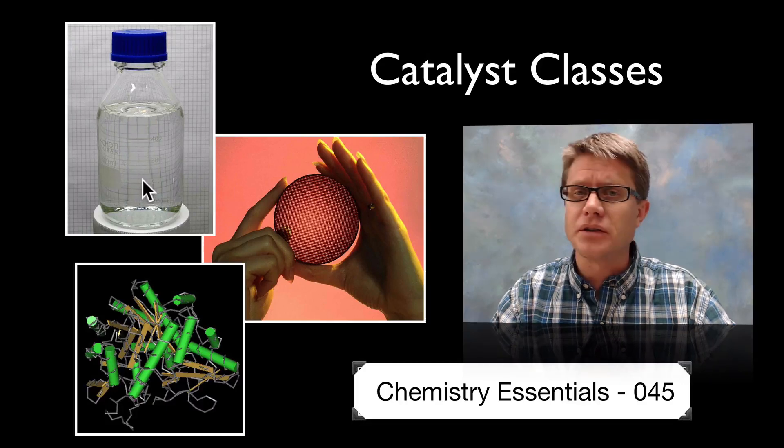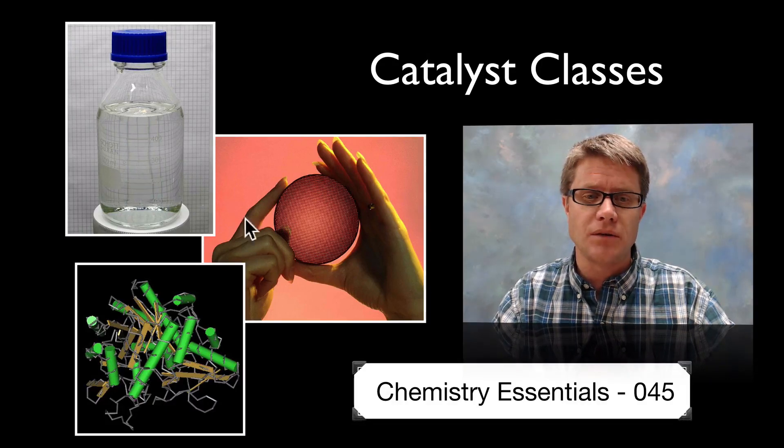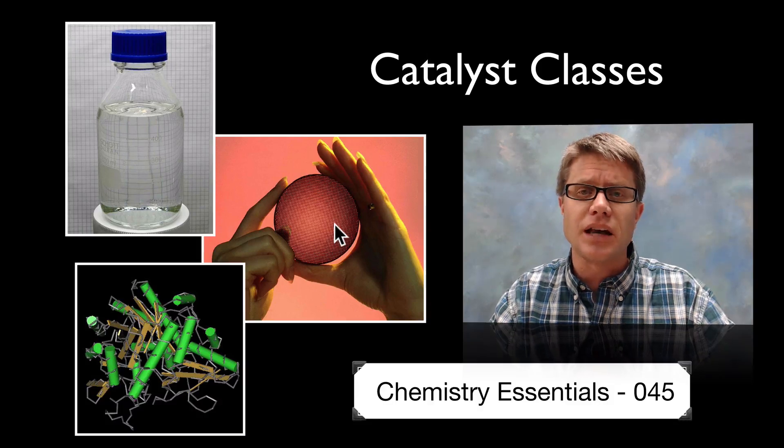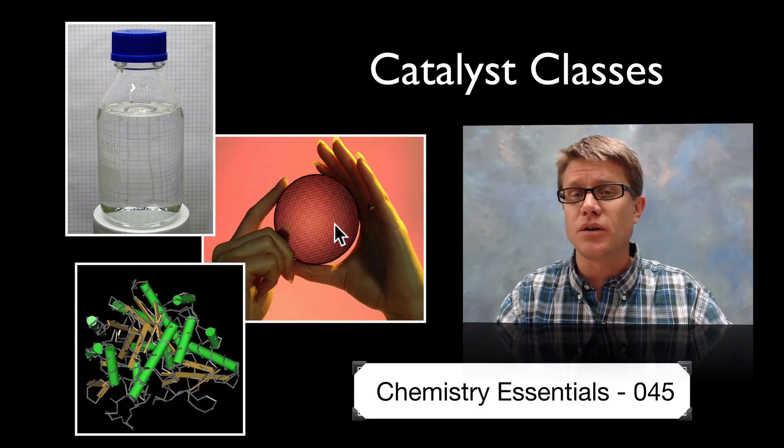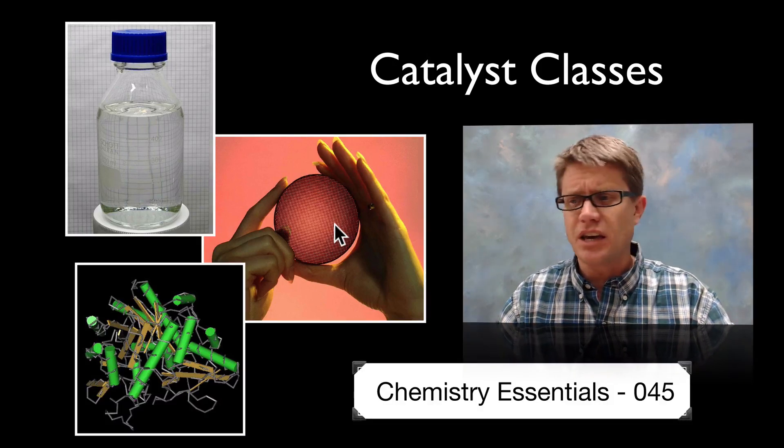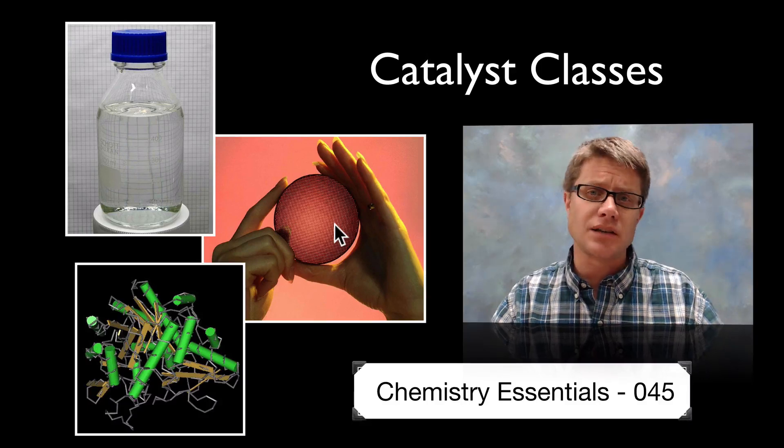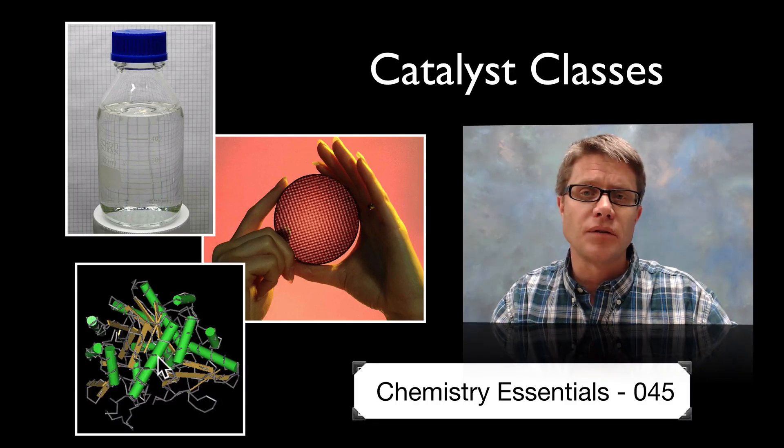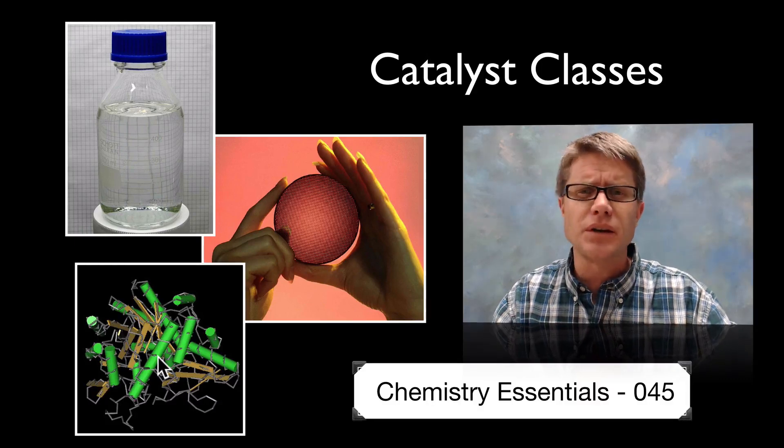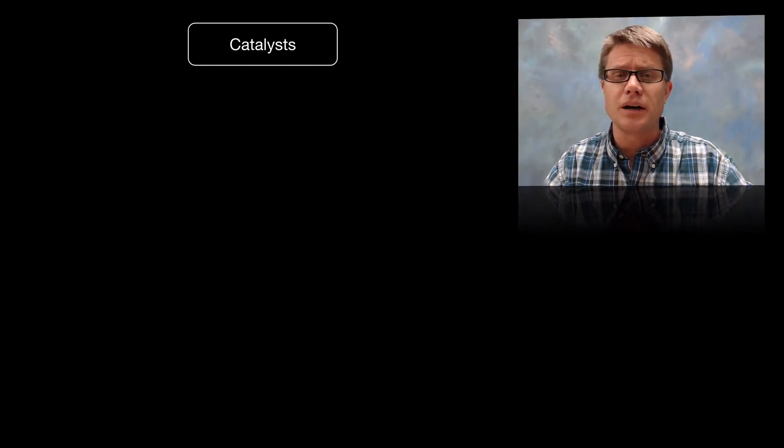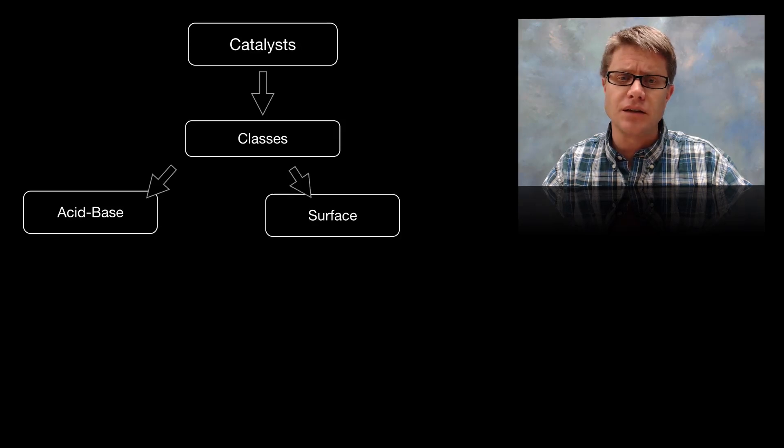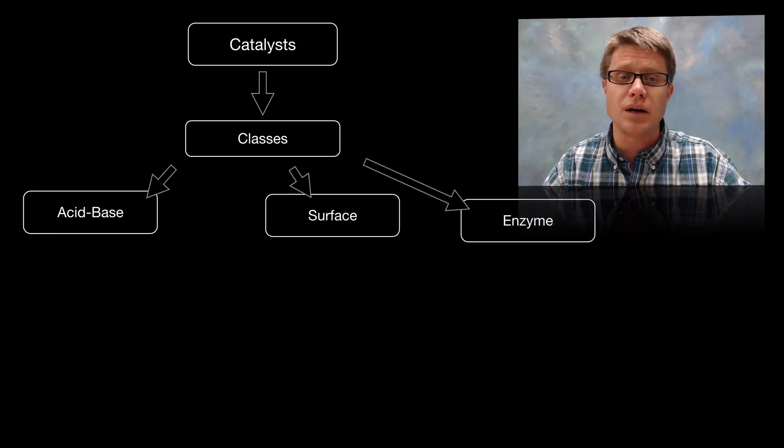We have acid base catalysts. So this sulfuric acid is going to be an example of that. We have surface catalysts, and so this would be similar to the catalyst you're going to find in a catalytic converter in your car. It's able to take carbon monoxide, this dangerous gas, and convert it into carbon dioxide. And then enzymes are going to be another group of catalysts, and those are going to run every chemical reaction inside a living body. And so catalysts can be broken into three classes: we've got acid base, surface, and then finally we have enzymes.